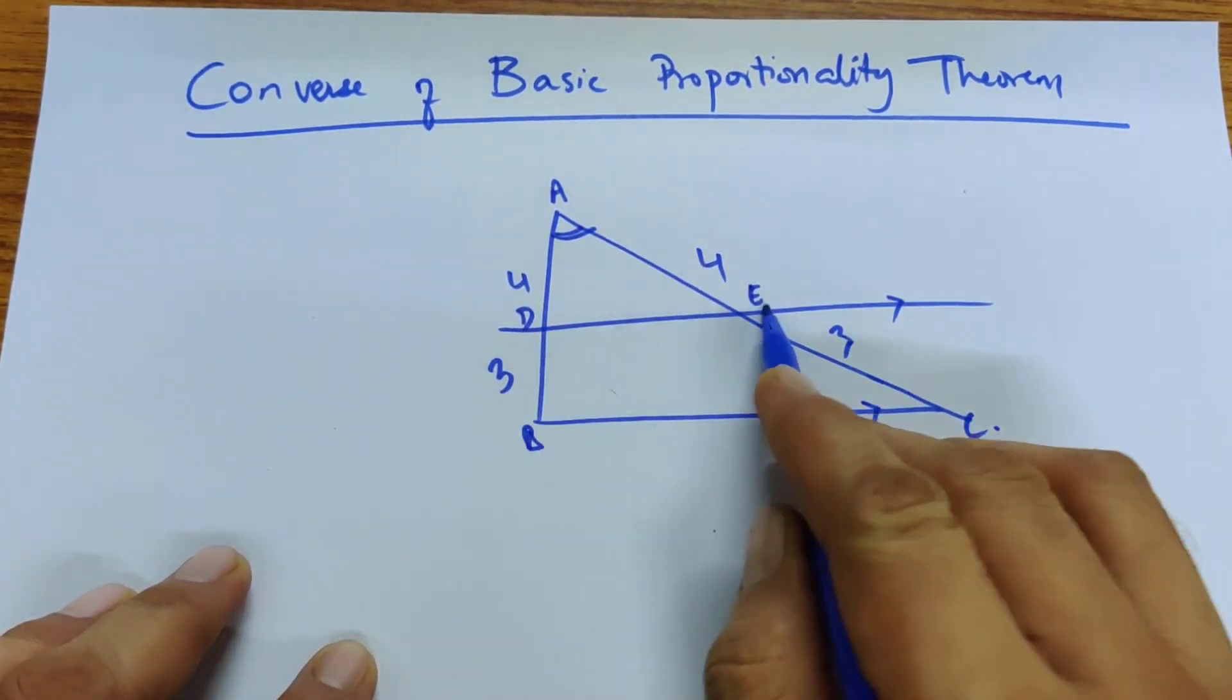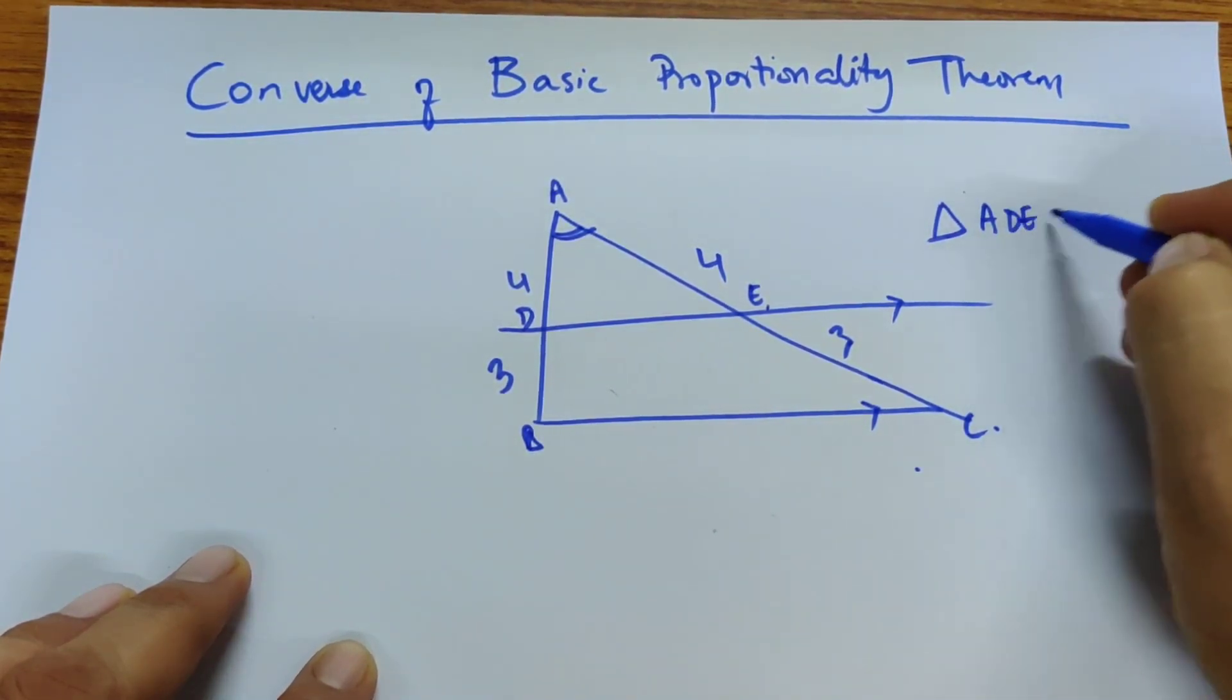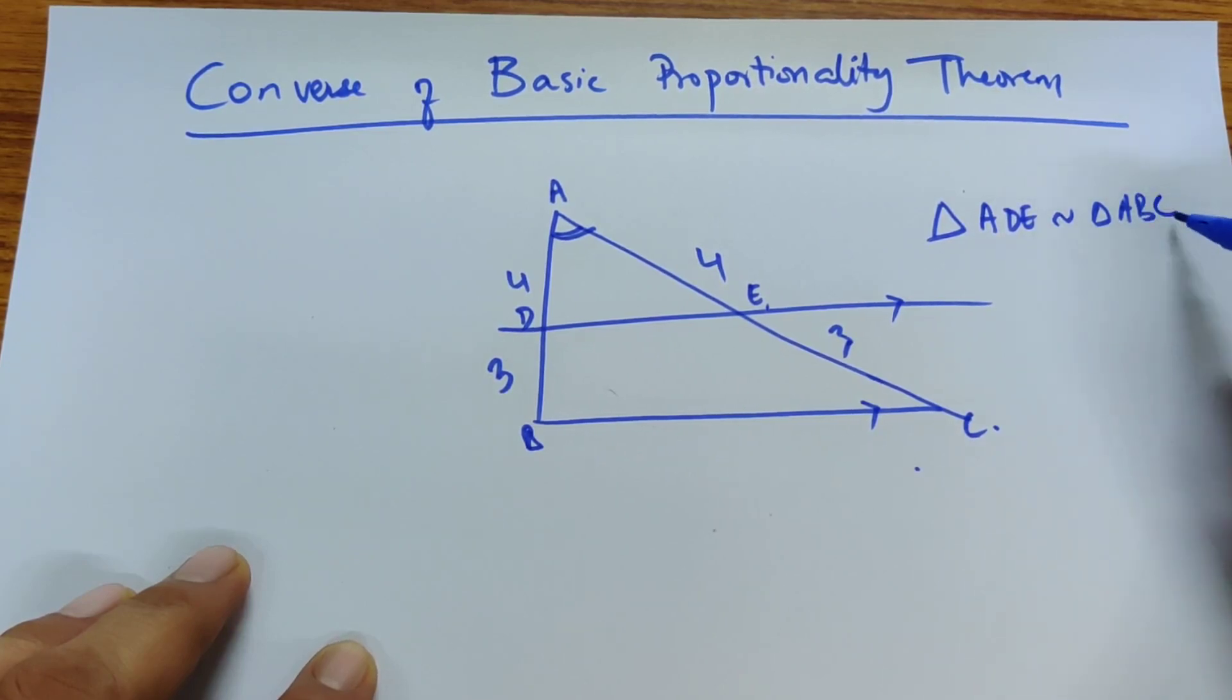And let's say this line intersects at DE, so basically the triangle ADE is similar to your triangle ABC, why?